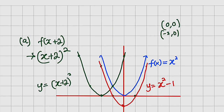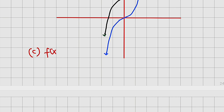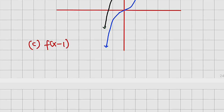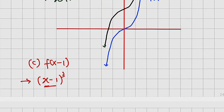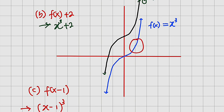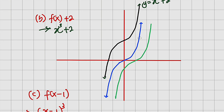Then let us pick the second transformation, which is f of x minus 1. This is an internal change — wherever we have x, we replace it with x minus 1, giving us x minus 1 to the power of 3. Without constructing an entirely new function, we shift the graph one unit to the right, since the value is negative. The original blue function shifts to give us a new green graph: y equal to x minus 1 to the power of 3.